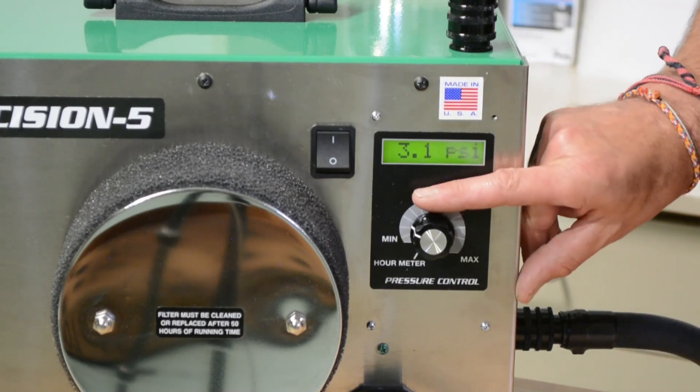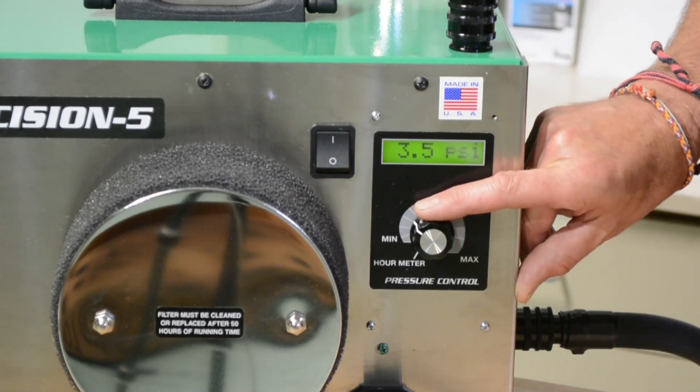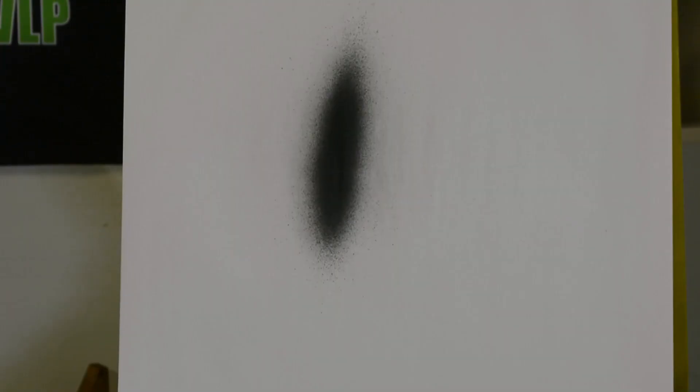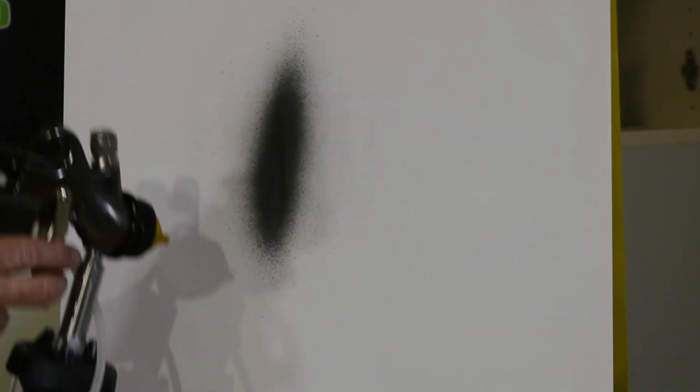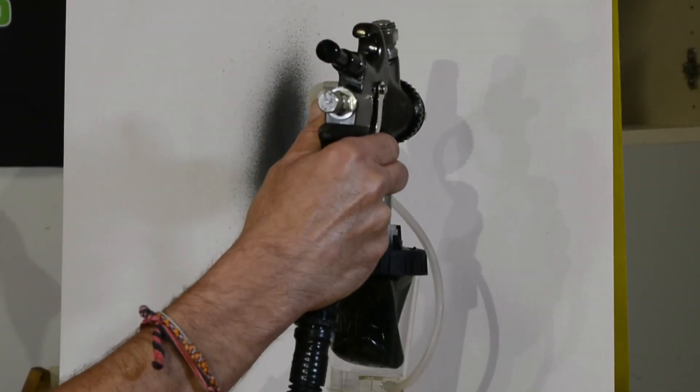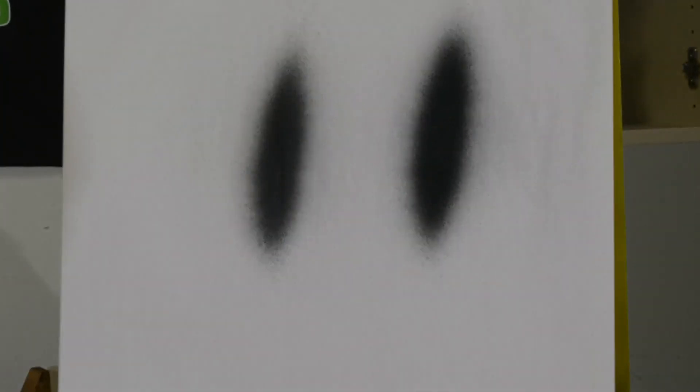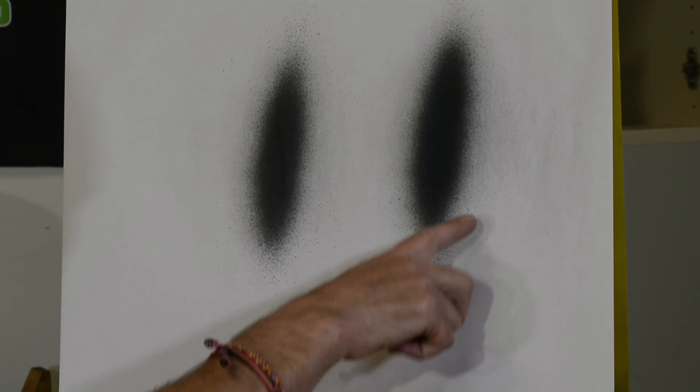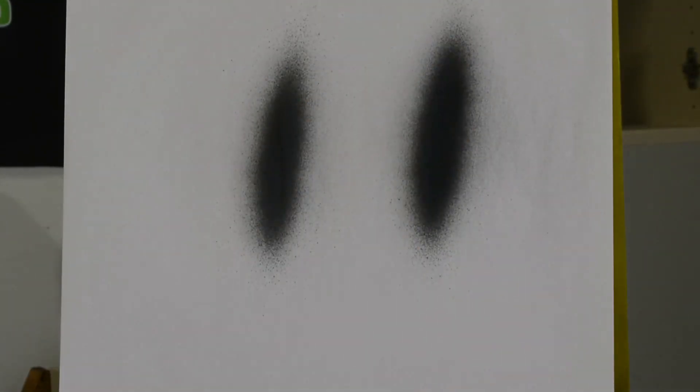Three psi didn't work, so let's go up to three and a half. Now this is with three and a half psi. We can see it's starting to get a little more even. We got a little bit less of the larger particles, but we're still not there. So let's adjust it another half a psi. We'll go up to four.